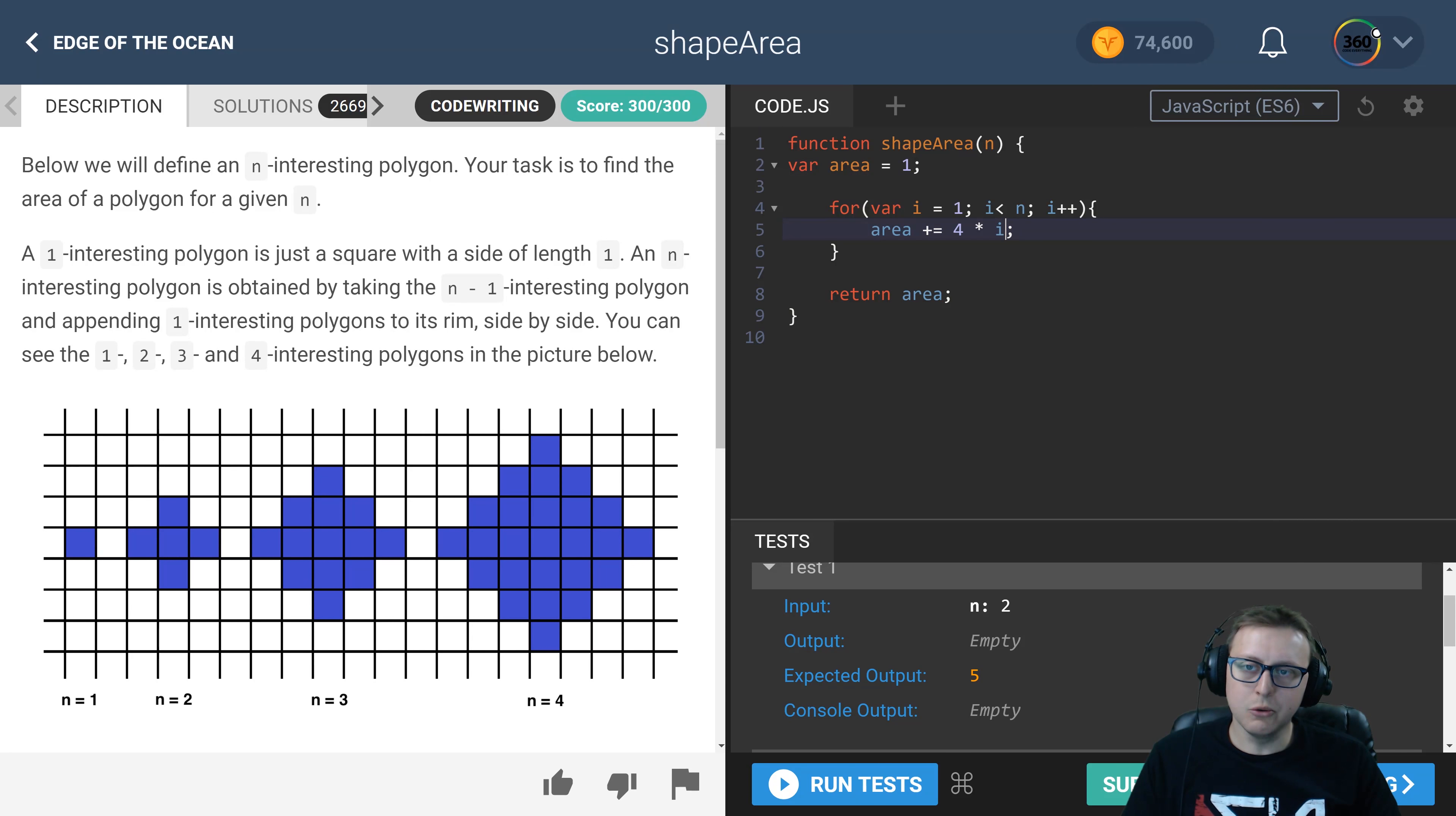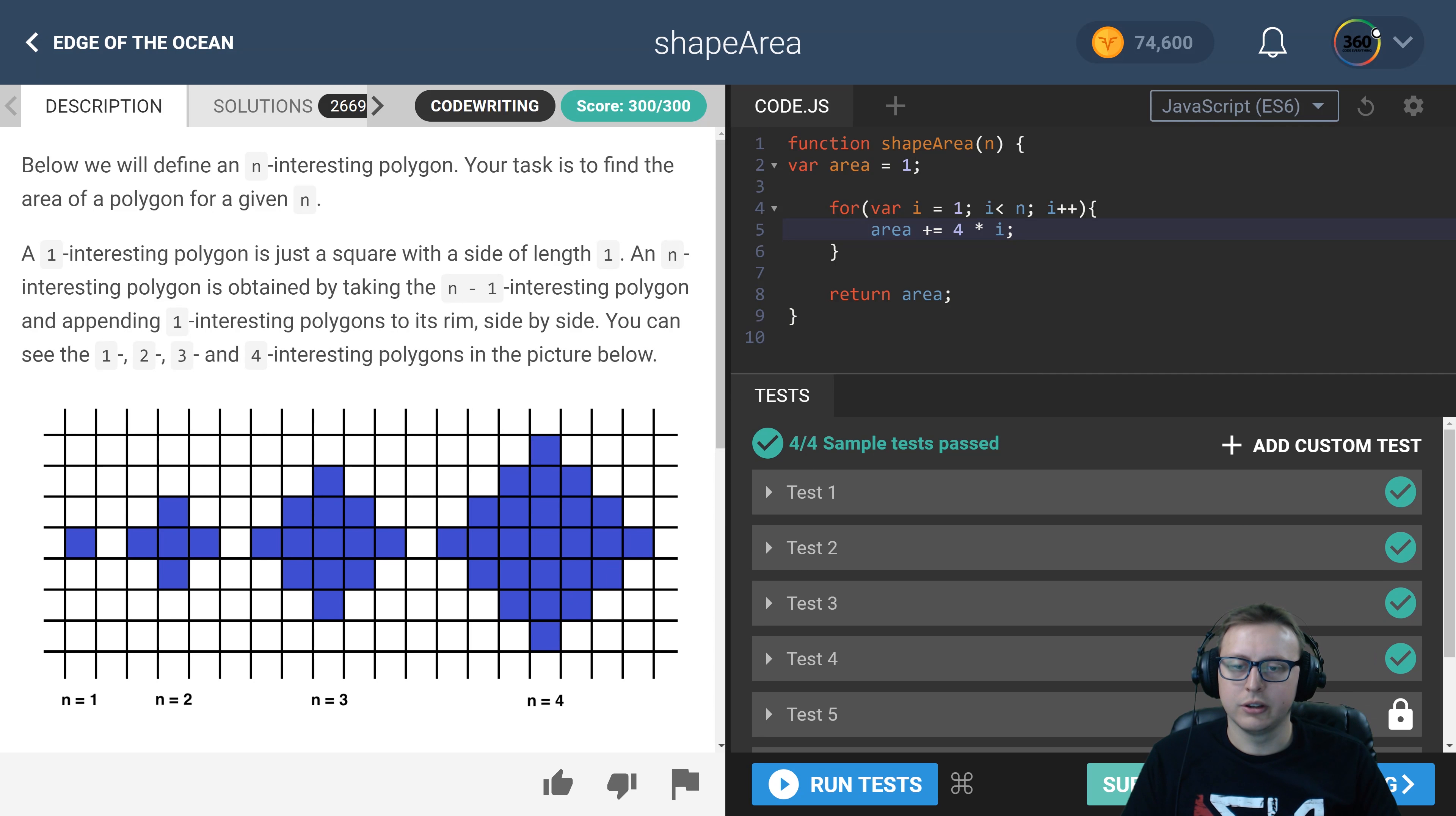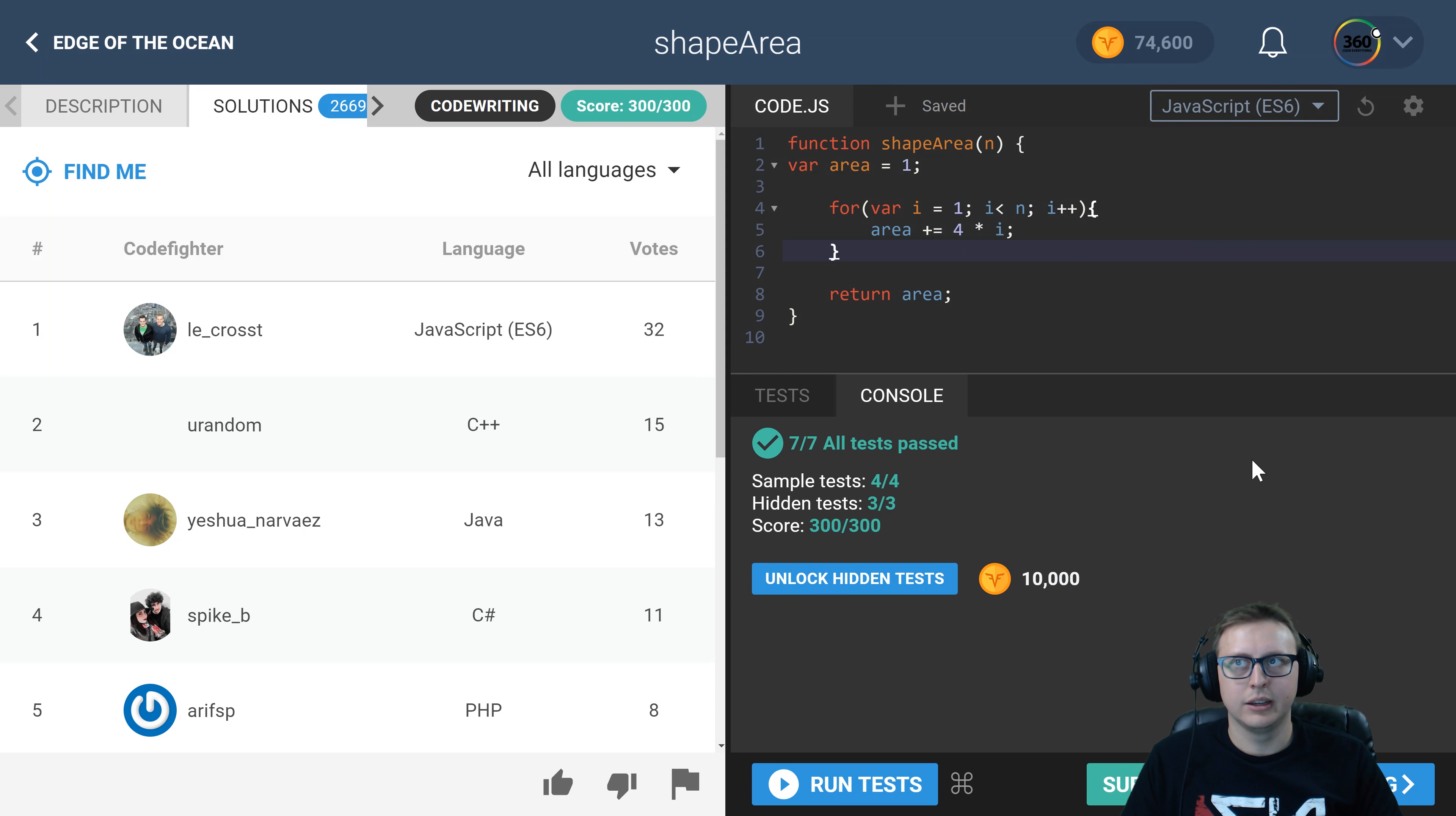And then finally we return, and all our tests are passed. Now there's probably a couple different ways that you could write this. There's probably a cleaner way than a for loop, but it's pretty basic to get going.